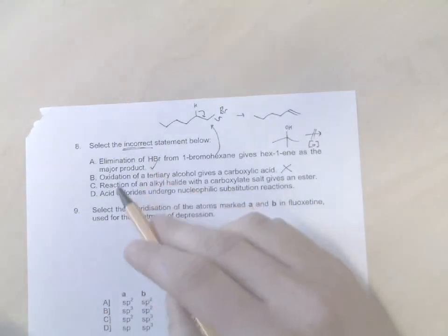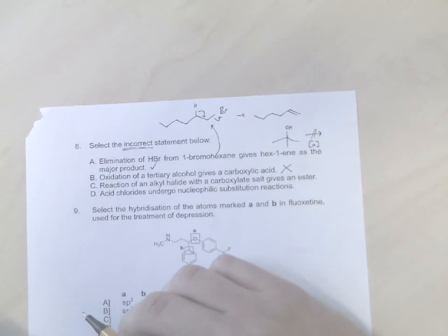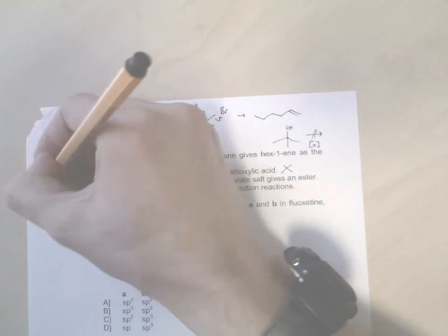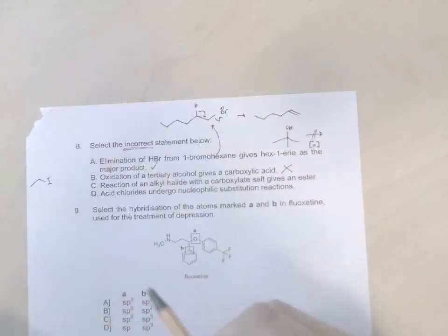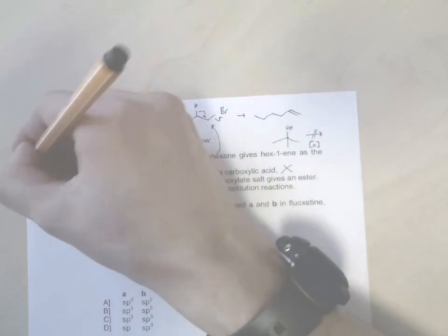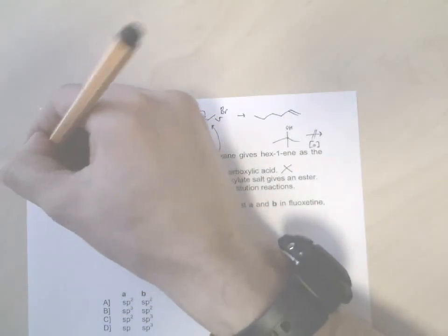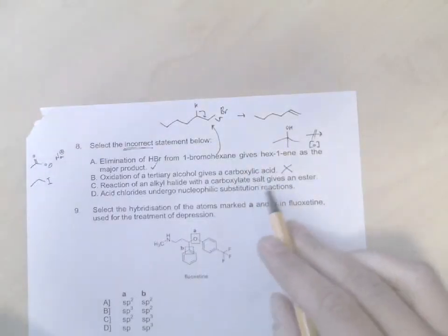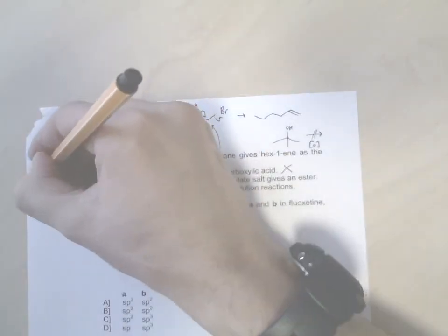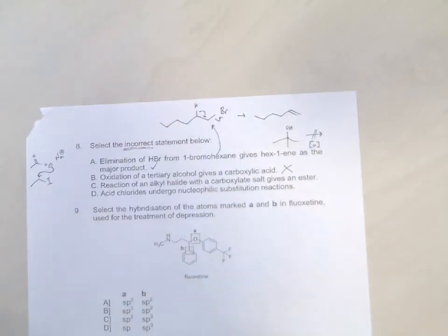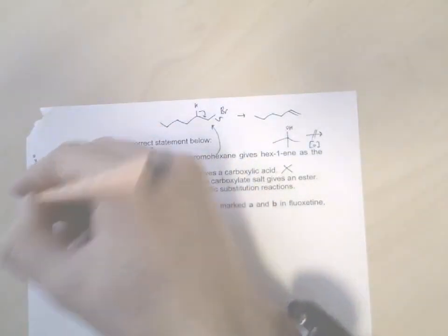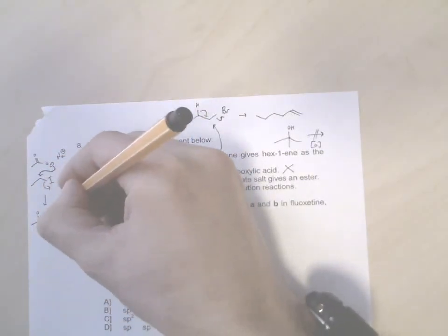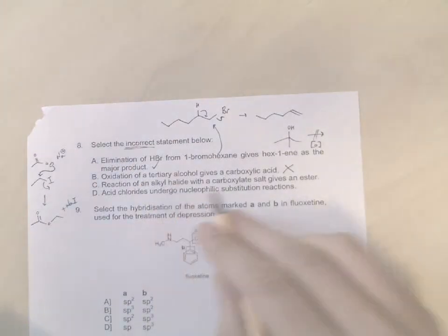So we found an incorrect answer, but let's just check with C and D to make sure we haven't made a mistake. Reaction of an alkyl halide, okay so a simple alkyl halide would be ethyl iodide, with a carboxylate salt - okay so here is a carboxylic acid as the, let's say, sodium salt - gives an ester. Okay, well that mechanism would be: the negative charge would attack the delta plus and kick out iodine, and you would end up with ethyl ester plus sodium iodide.